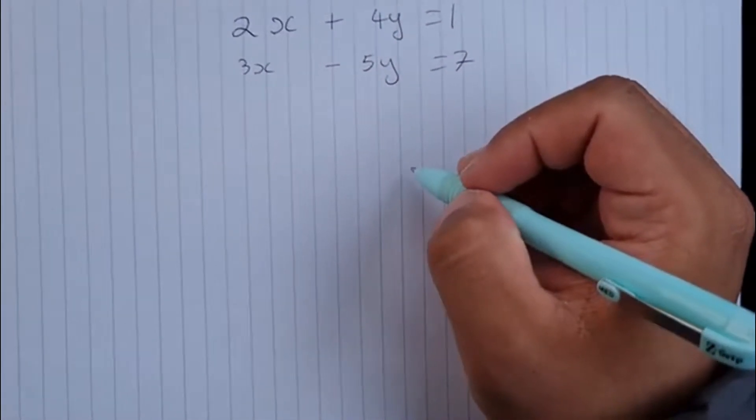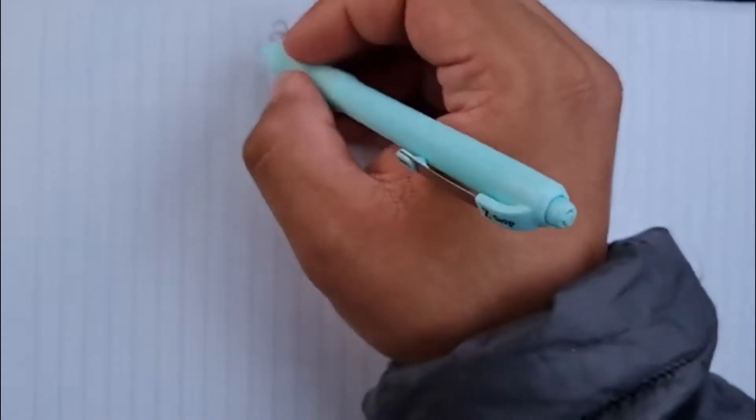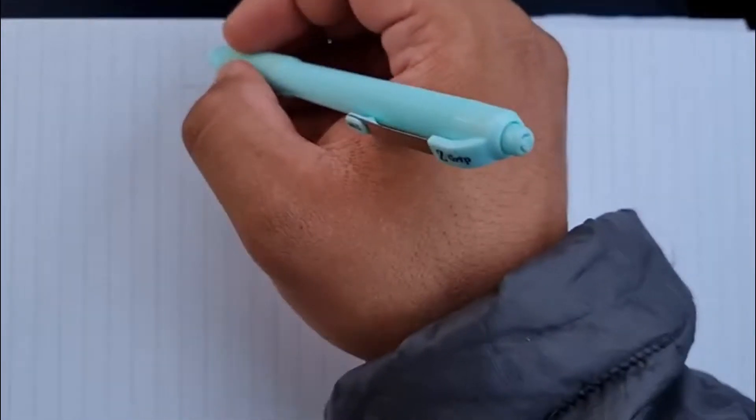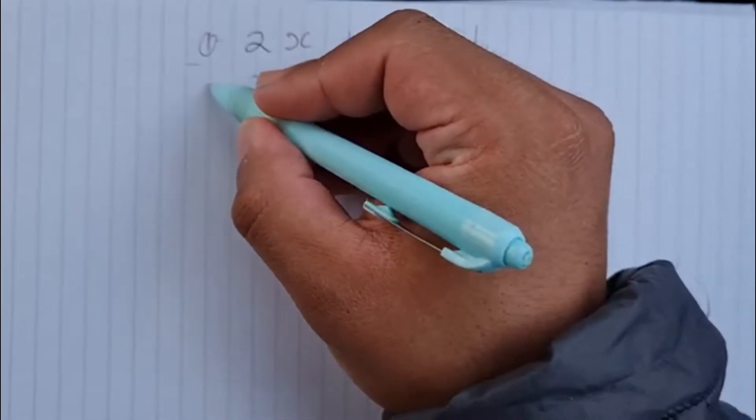In this question, we are asked to solve a pair of simultaneous linear equations. So the first thing I'm going to do is label my first equation as equation 1. The second equation is equation 2.